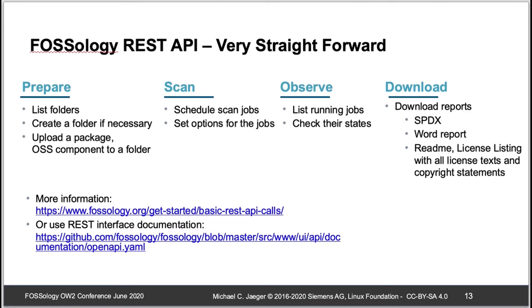REST API usage is straightforward. First you prepare — you can create folders, look at what's inside folders, and find the folder you'd like to use. Then you schedule scan jobs depending on your choice: licensing only, or licensing and copyright statements. You then observe how long the scan jobs take — it's a long-running process, not a simple request-response. After scan jobs are finished, you can download different reports.